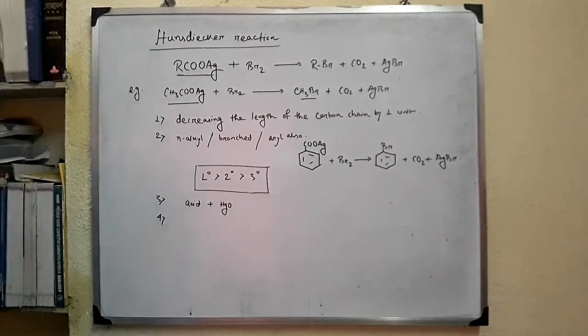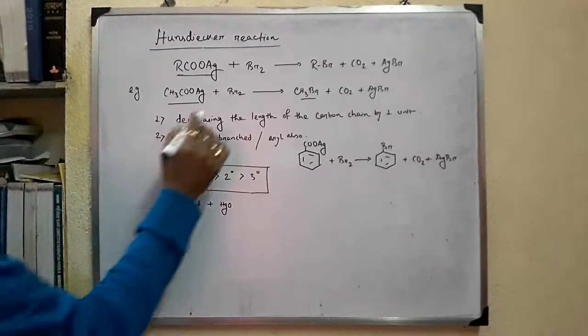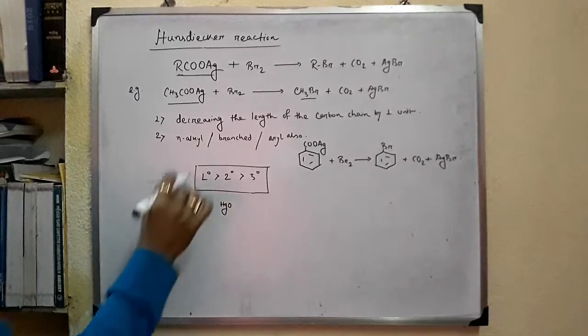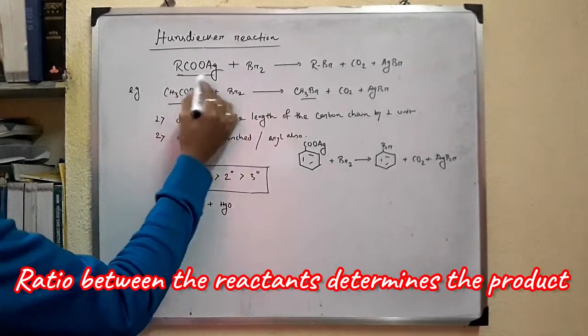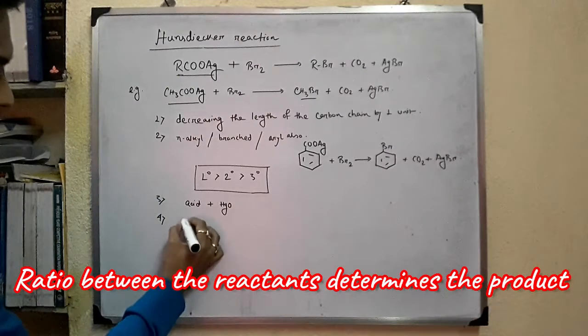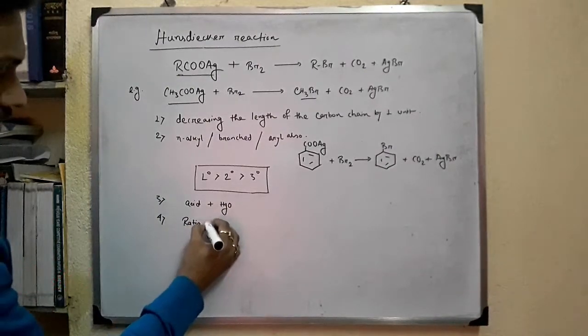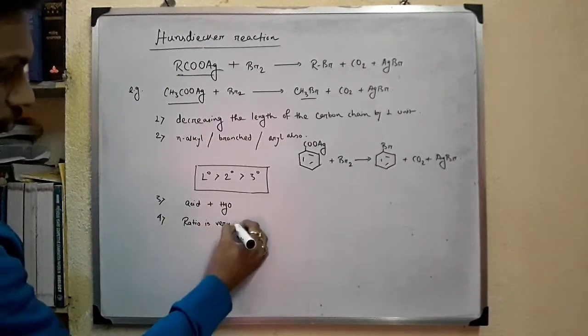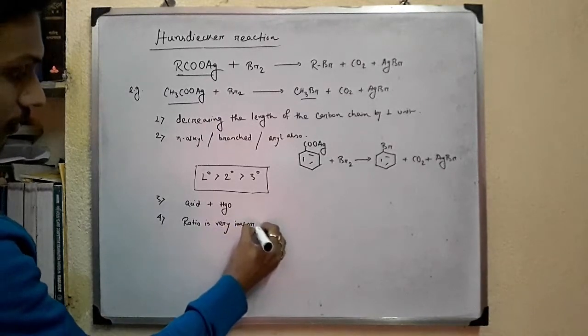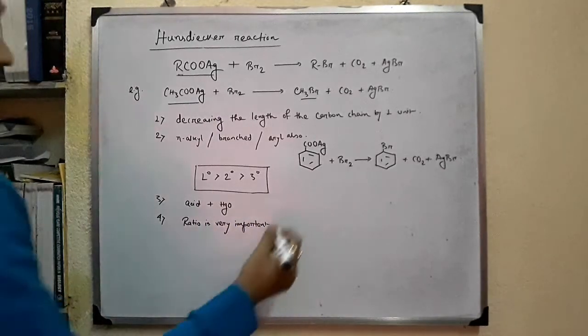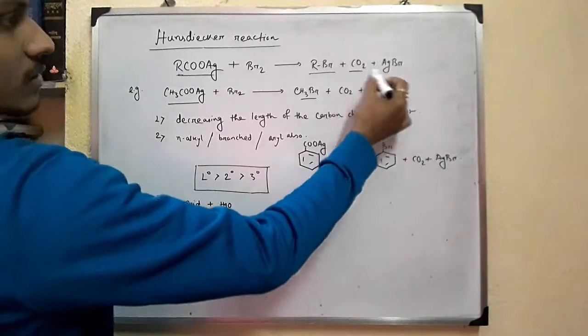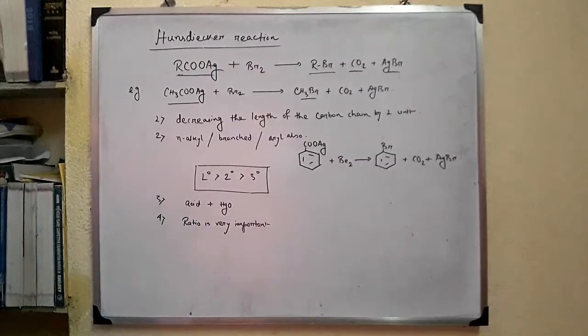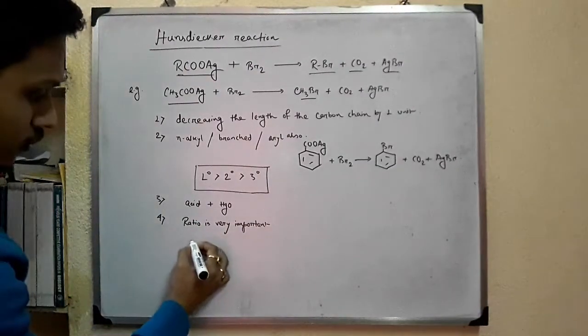Point number 4: The ratio. This ratio is very, very important because this ratio determines the products. If the ratio is 2 to 1,